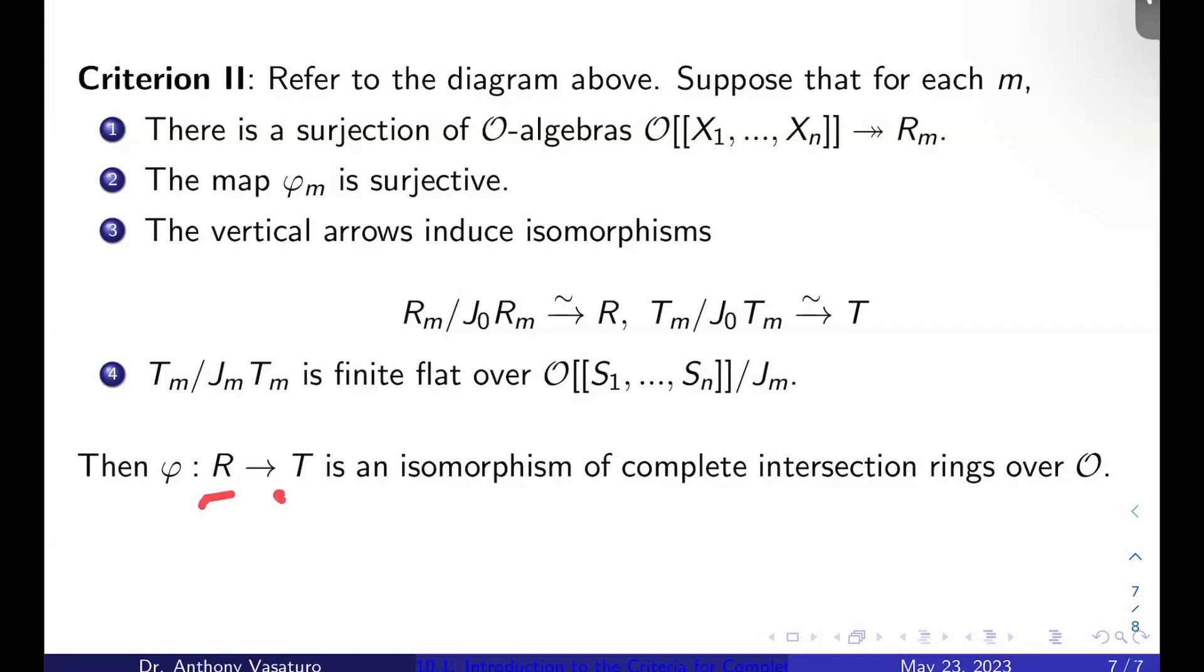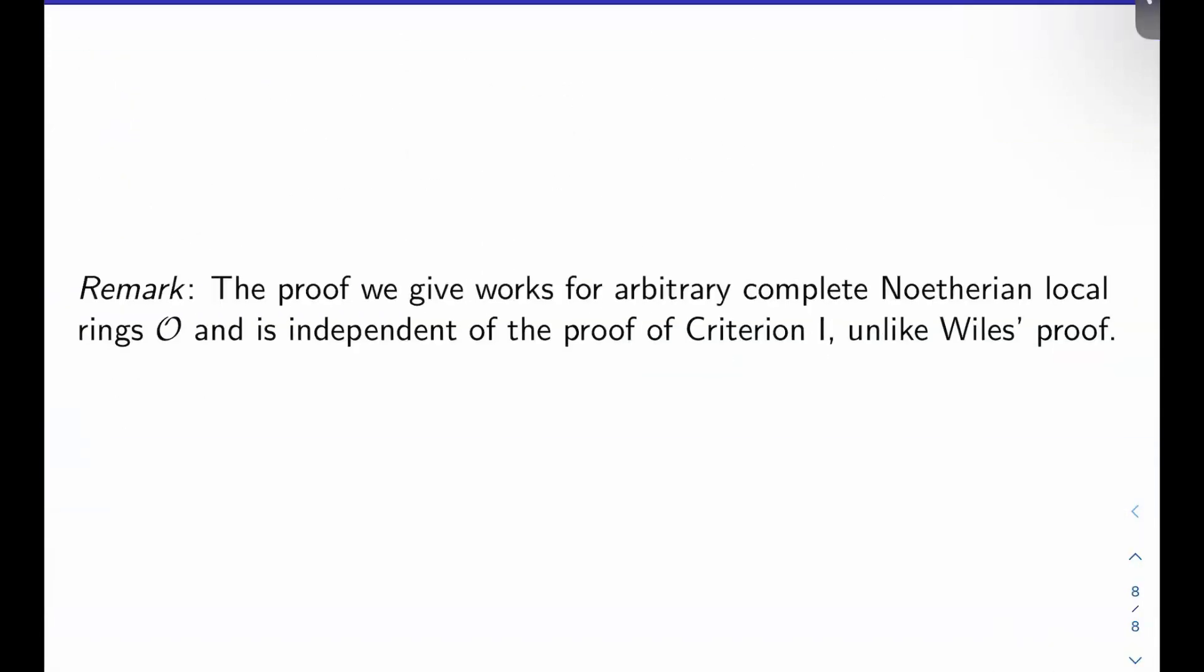Speaking of that, my other remark is the reason there are two criteria to begin with is because there are two cases to prove when you're trying to prove R equals T. There's the minimal case, which will require one of these criterion, where you're trying to work with an empty set of primes. And then there's the non-minimal case where you actually have primes in your special auxiliary set, if you remember all this from chapter one and chapter two of my notes. If you haven't, go back and rewatch those videos.